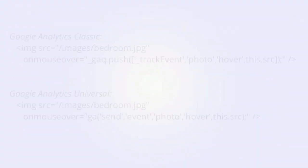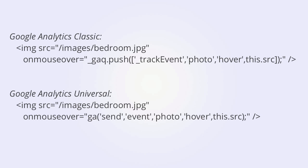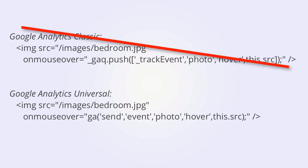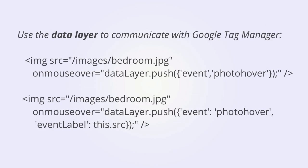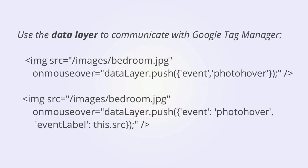So we are going to need to manually code our event, but we need to remember that we no longer have the Google Analytics tracking code on the page directly — we have the Google Tag Manager container — so we can't use the regular coding for Google Analytics Classic or Universal that we would normally use for event tracking. Instead, we're going to use the data layer object to communicate with Google Tag Manager. All we need to push into the data layer is an event.